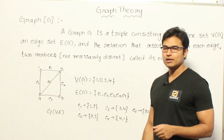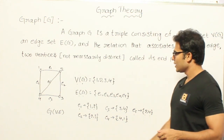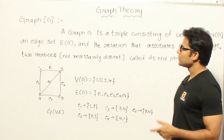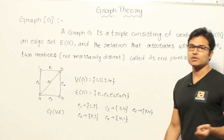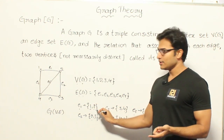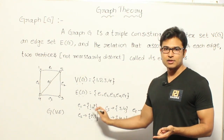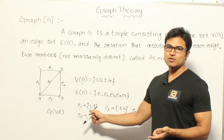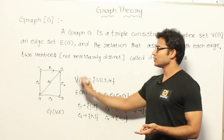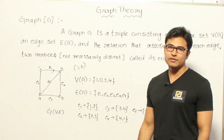Edge E1 is between 1 and 2, E3 is between 3 and 4, E5 is between 2 and 4, E2 is between 2 and 3, and E4 is between 4 and 1. We are talking about an undirected graph, so we need not worry about where the edge is starting and where it is ending. If the graph were directed, we would write this as an ordered pair.